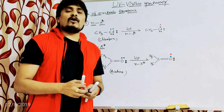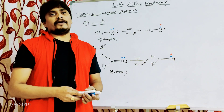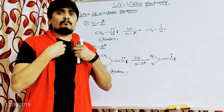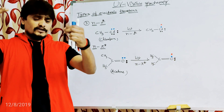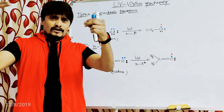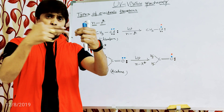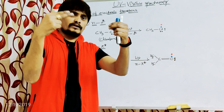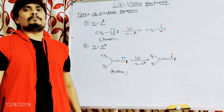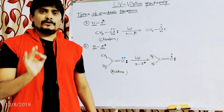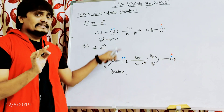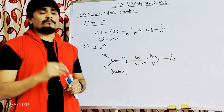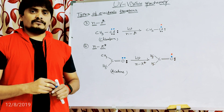So this is about the types of electronic transitions. In order to understand these types of possible electronic transitions whenever UV-visible light is passed through the sample or the molecule, please do watch the previous video to understand this concept very clearly. I hope you understood this video — thanks for watching.